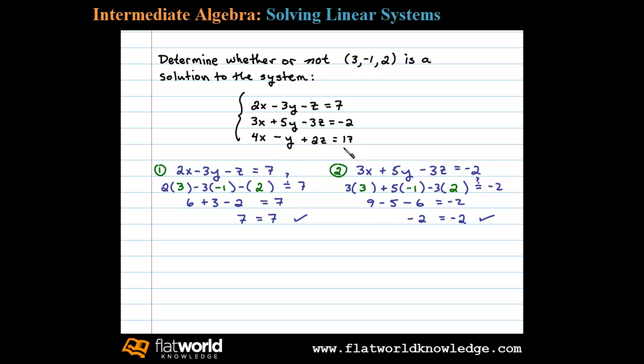Finally, let's look at the third equation. Substituting 3 in for x, -1 in for y, and 2 in for z, we have 12 + 1 + 4, and we need to see if that equals 17. Sure enough, it does. Therefore, the ordered triple satisfies all three equations, so it is a solution.